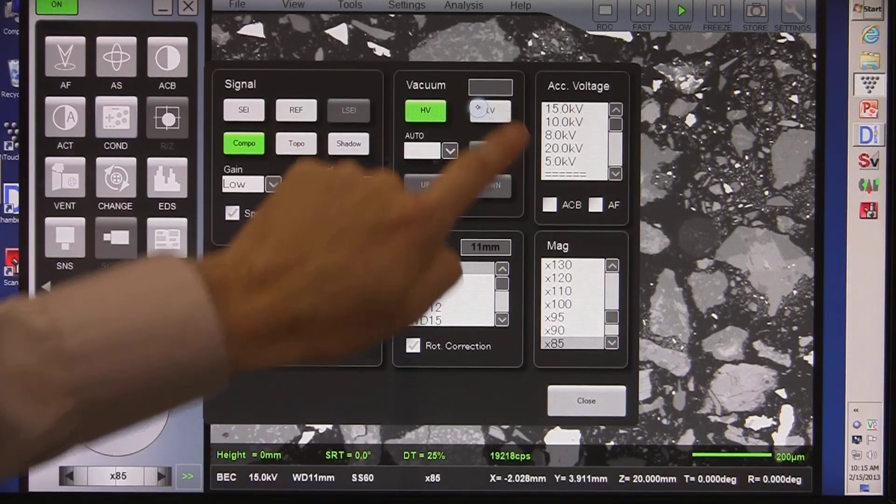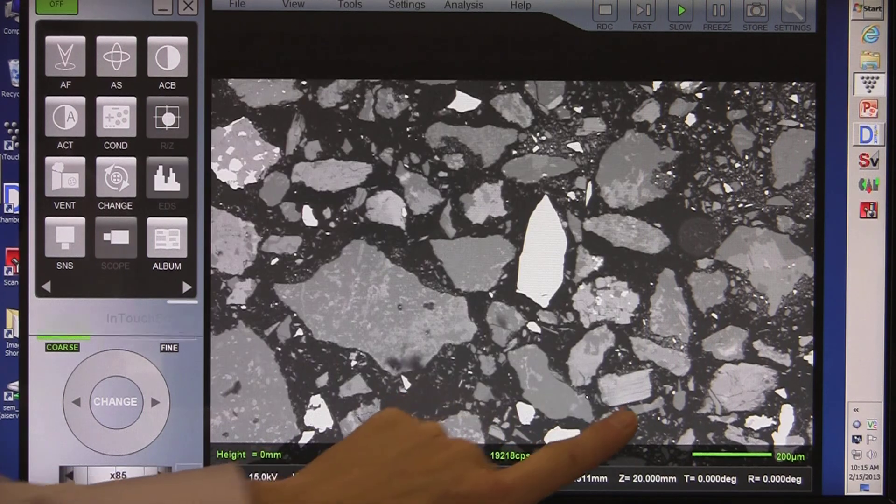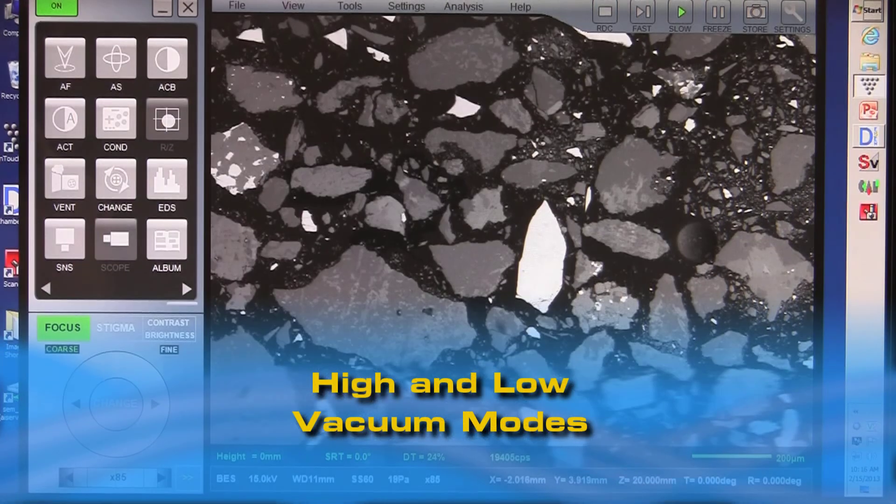Switching from high vacuum to low vacuum is done at the simple touch of a button, without the need for venting or hardware exchange.